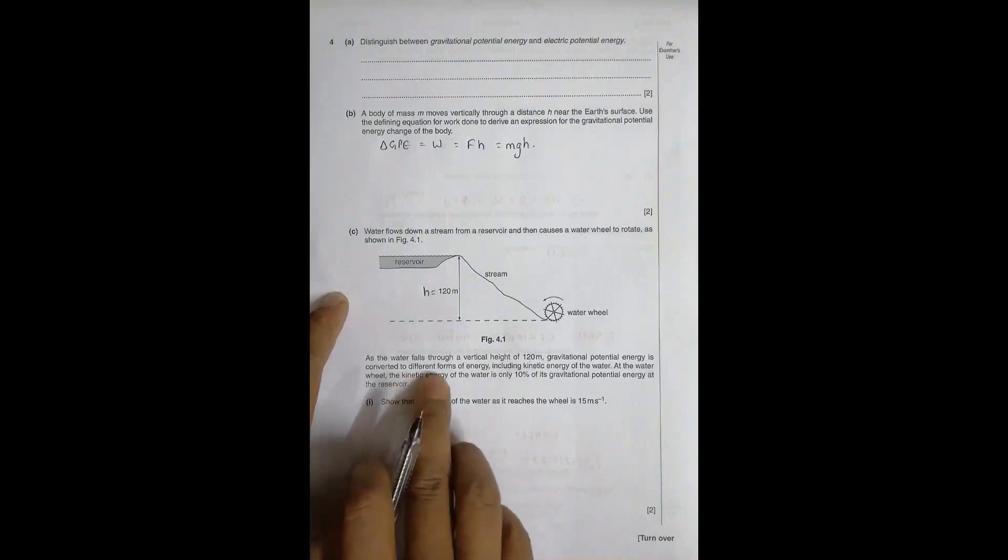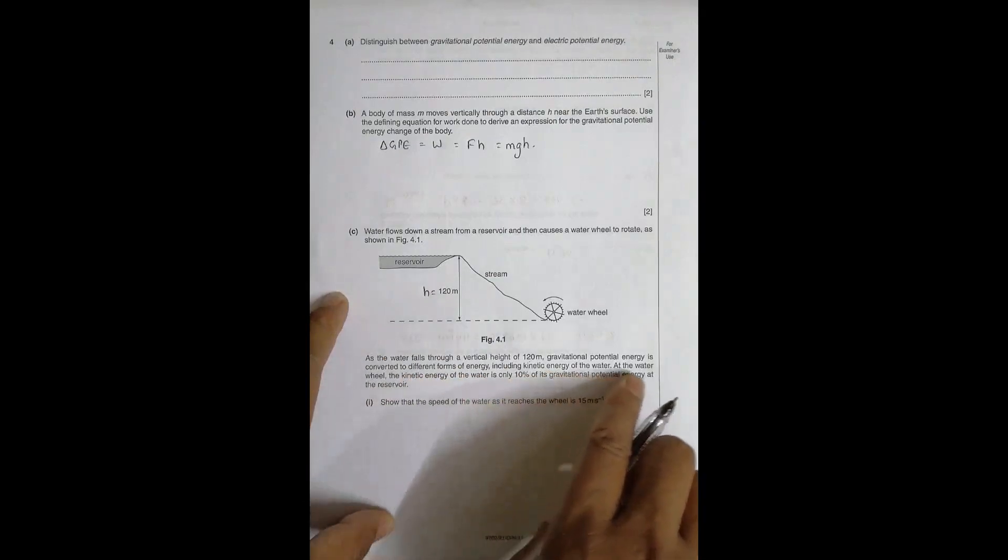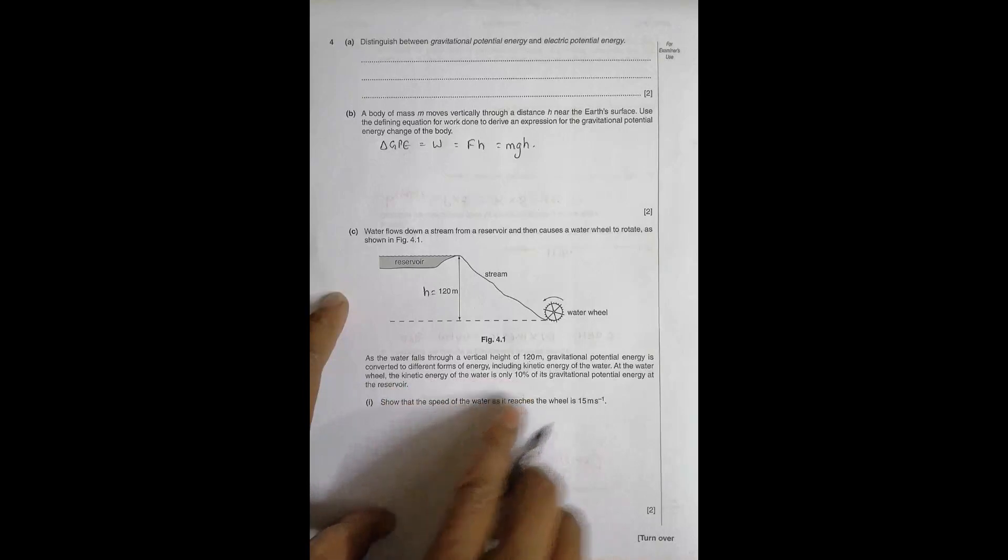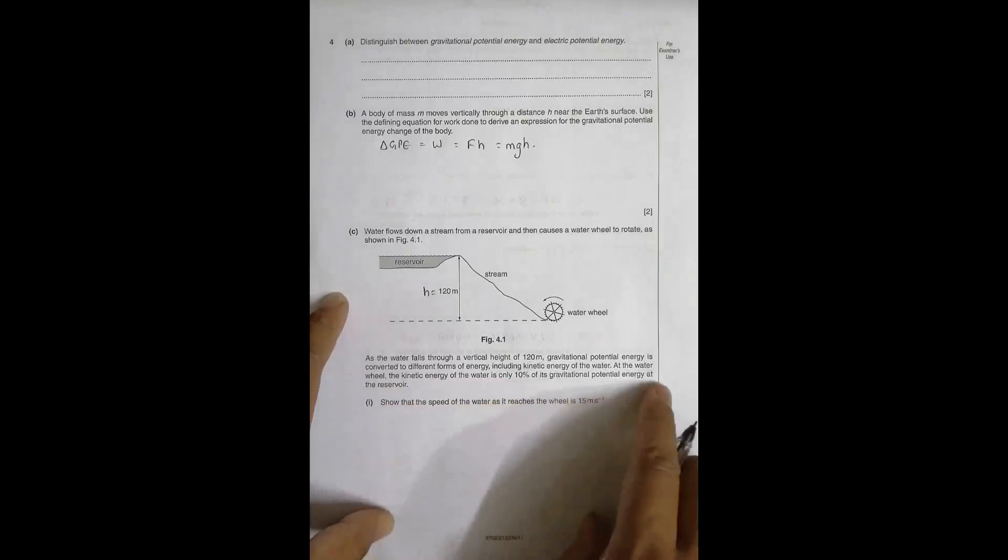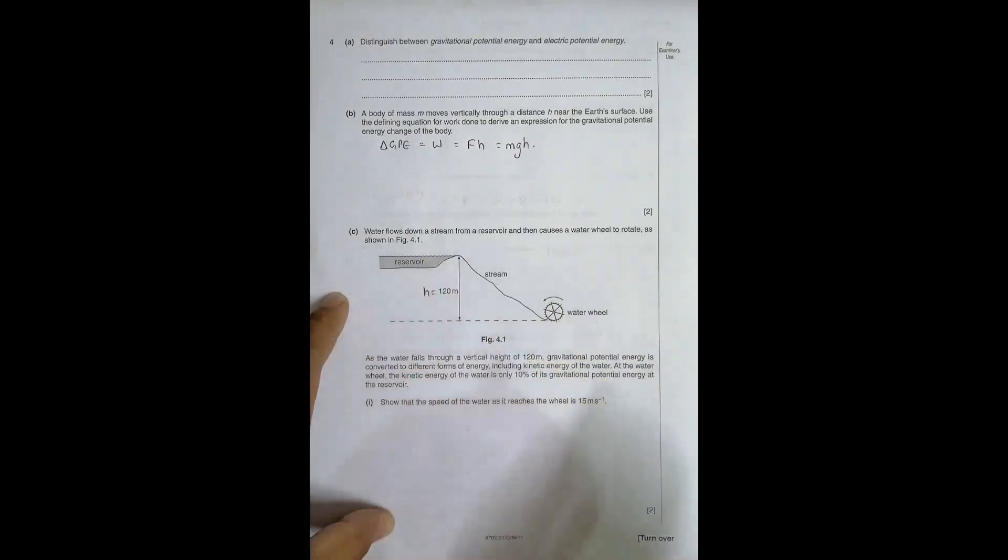Gravitational potential energy is converted to different forms of energy including kinetic energy of the water. At the water wheel, the kinetic energy of the water is only 10% of its gravity energy at the reservoir. So the KE here is equal to 10% of the PE here.